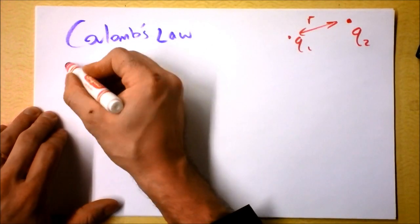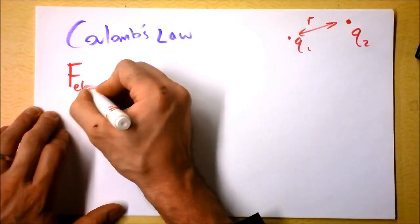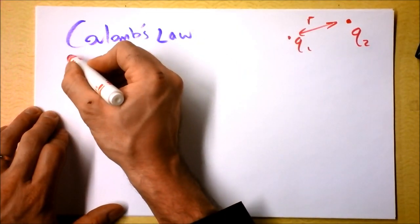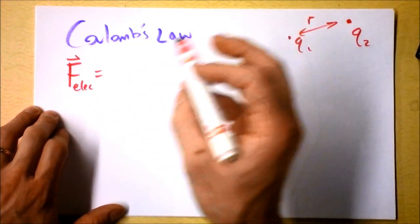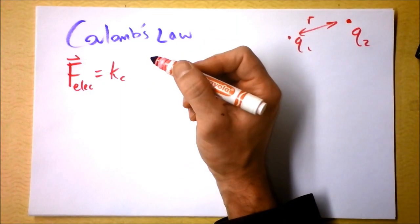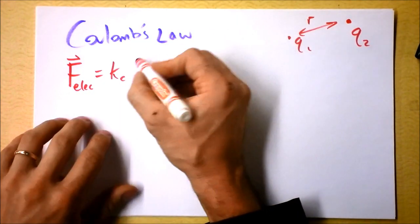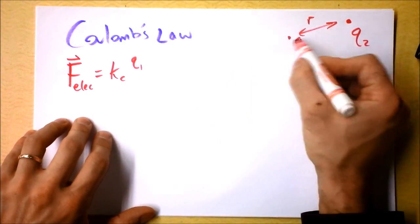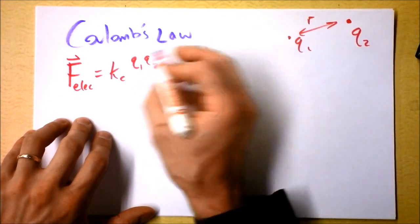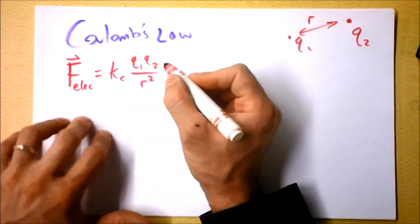And you're thinking that you want to know that force. That force is the electric force between two charges, and it's gonna be Kc, which is Coulomb's constant, some constant in the universe, times the quantity of charge on thing one, times the quantity of charge on thing two, divided by how far apart they are squared.